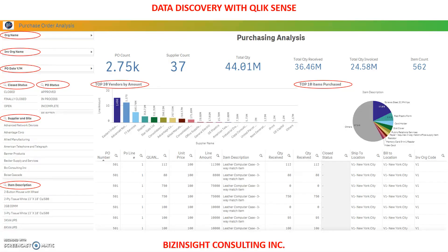At the top, we have KPIs to show number of POs, number of approved suppliers, total quantity purchased, total quantity received, and total quantity invoiced. In the center, we have a bar chart to show the top 20 suppliers along with the amount, and top 10 items.